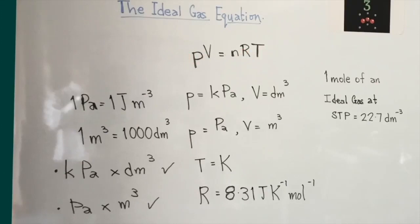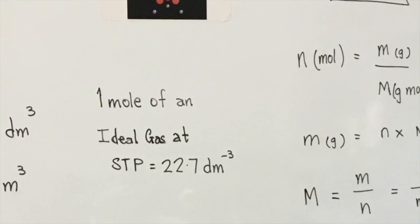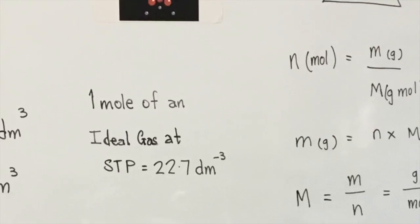When you use this equation, you typically have pressure given as kilopascals and volume given as dm³. Because all of these relationships are true, it's possible to directly multiply kPa by dm³ and use these units for the gas equation. If volume is stated in m³ and pressure in pascals, a similar multiplication can happen. But if there's any other combination, it's very important that you do the required unit conversions before solving.